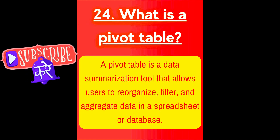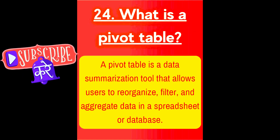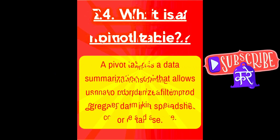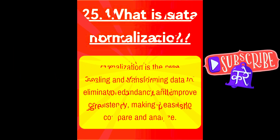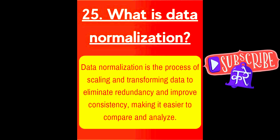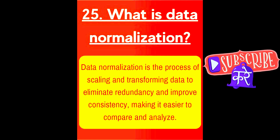Next question is, what is a pivot table? A pivot table is a data summarization tool that allows users to reorganize, filter, and aggregate data in a spreadsheet or database. Next question is, what is data normalization? Data normalization is the process of scaling and transforming data to eliminate redundancy and improve consistency, making it easier to compare and analyze.